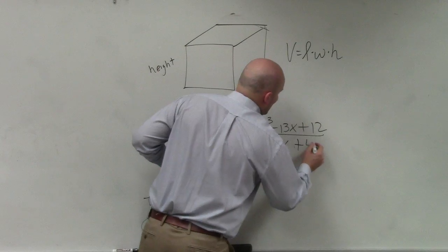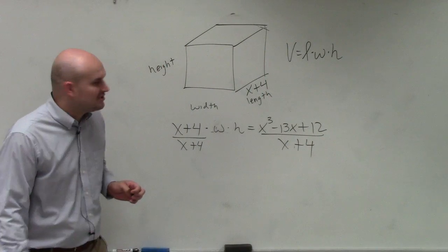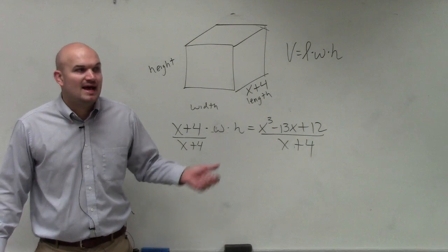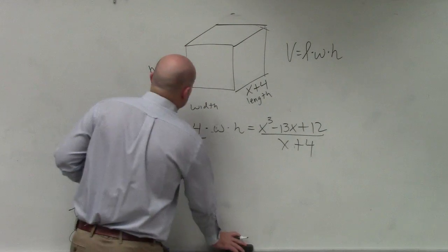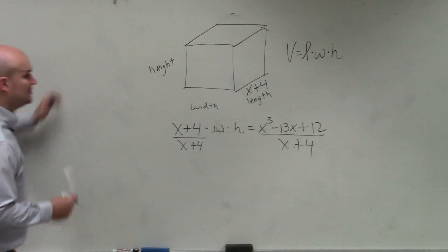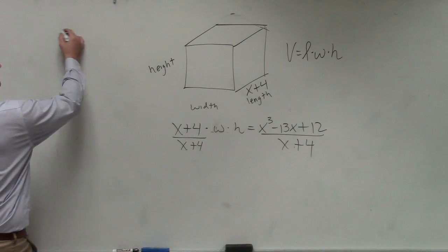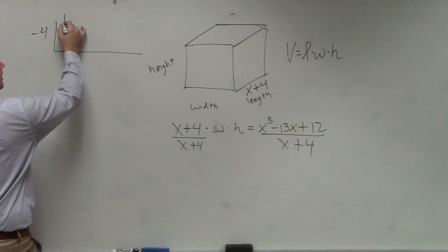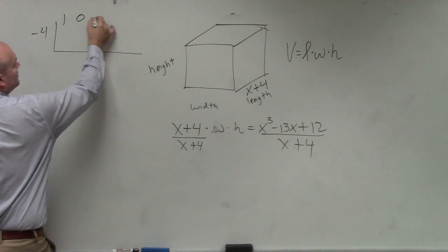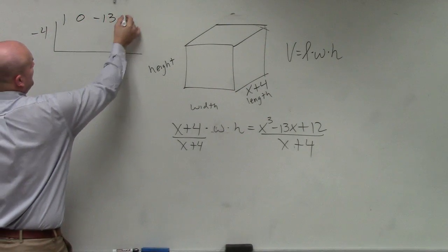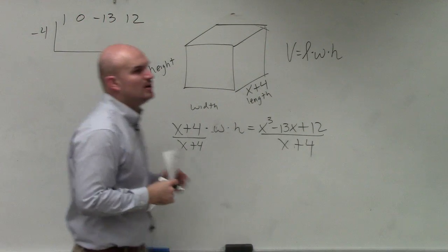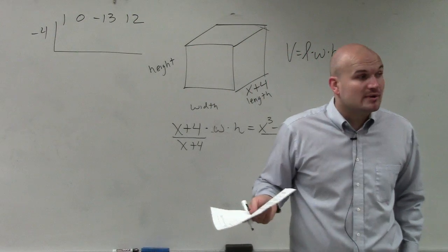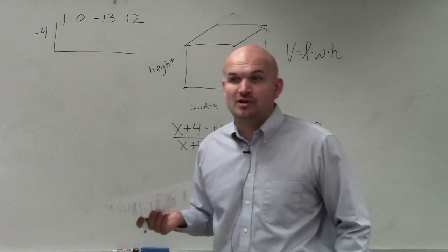Do we know how to divide x cubed minus 13x plus 12 by x plus 4? Yes — so let's go ahead and do that. I'm going to use synthetic division. I'm going to use negative 4 with coefficients 1, 0, negative 13, and 12. Does everybody see why I used that 0? I don't have an x squared term, so whenever you're missing an x squared, you've got to plug in a 0.